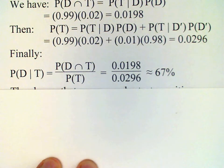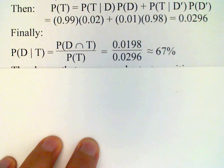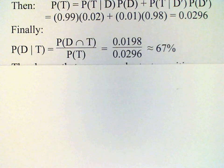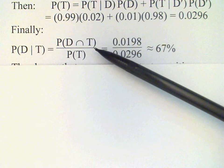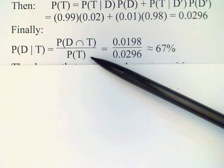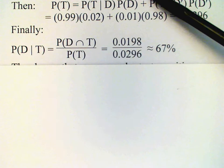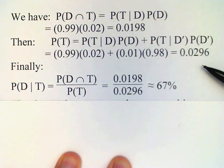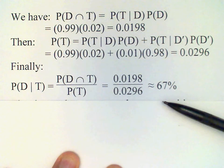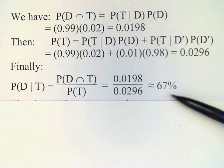Finally, we can calculate the conditional probability we're looking for: the probability that the person actually uses the drug given a positive test. This is just the definition of conditional probability — the probability of the intersection of these two events divided by the probability of the conditioning event. We now know both of these values: 0.0198 from earlier and 0.0296 just calculated. Taking the ratio gives us 67%.